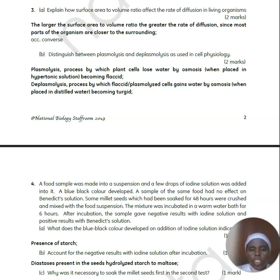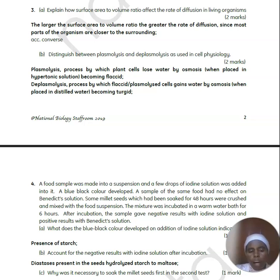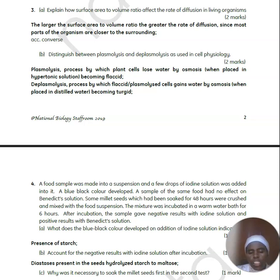Distinguish between plasmolysis and deplasmolysis. Plasmolysis is the shrinking of a plant cell when it is placed in a concentrated solution, where it loses a lot of water by osmosis. The cell membrane moves away from the cell wall and the cytoplasm shrinks towards the centre. Deplasmolysis is when you take that plasmolysed cell and place it in a hypotonic solution so that it gains its original size by gaining water by osmosis.